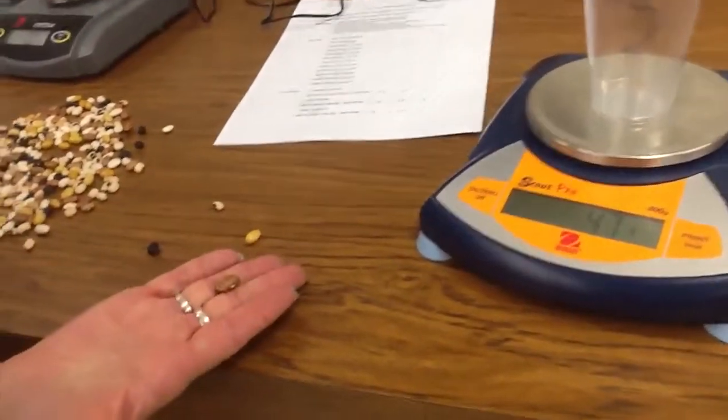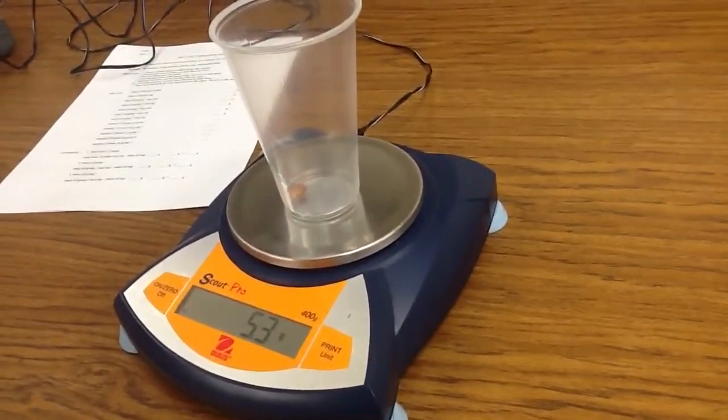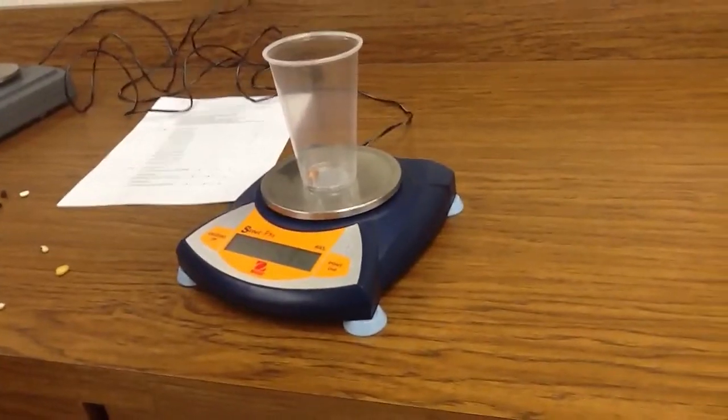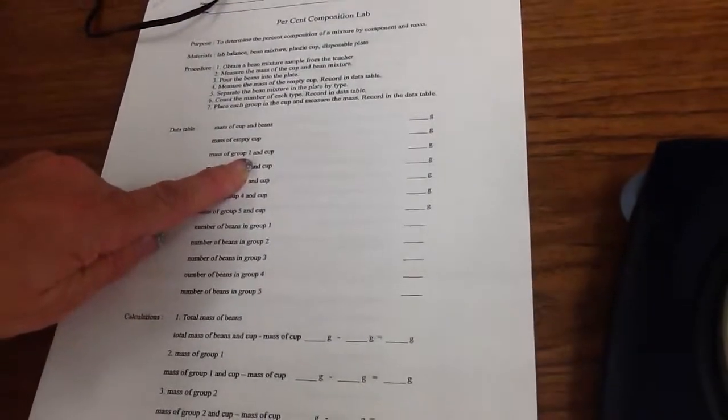Then when you get all of your speckled beans, put them in the cup and weigh all the speckled beans together. You'll record that for mass of group one. On your lab sheet where it says group one, give it a name. Speckled beans.